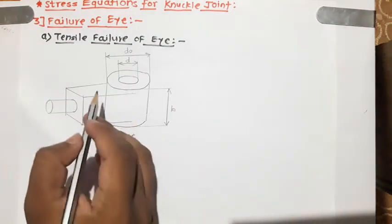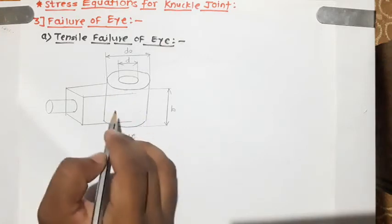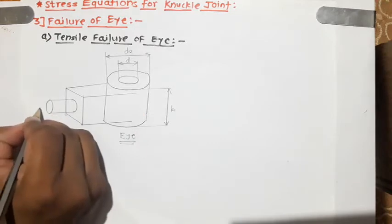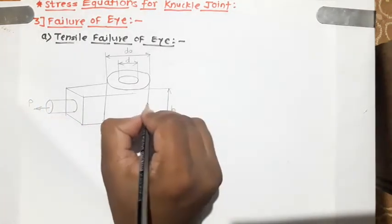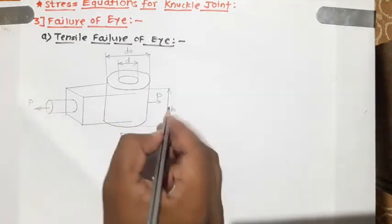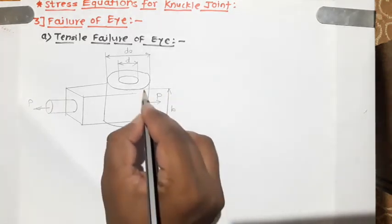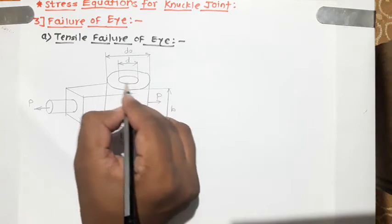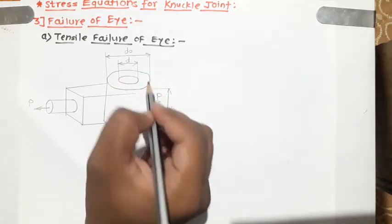Let us look at the diagram of this I-end. As we discussed in the free body diagram, this I-end is subjected to tensile load on both ends. It has the following dimensions: small b is the thickness of the I-end, d is the inner diameter, and D0 is the outer diameter.